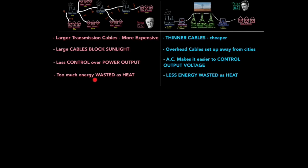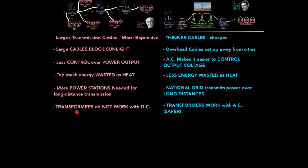With DC, too much energy is wasted as heat, whereas less energy is wasted as heat with AC. More power stations are needed for long distance transmission with DC, but the national grid transmits power over long distances for AC. Transformers do not work with DC, but transformers work with AC. This means we can boost voltage without need of a power station. But also, when it comes to our homes, it's safer because we can drop the voltage as well.